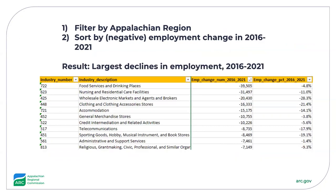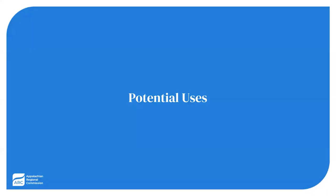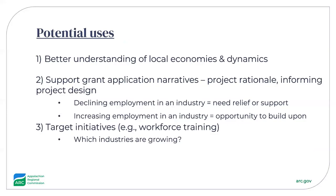Another example here shows the industries that saw the largest absolute declines in employment from 2016 to 2021. Once again, just a few clicks were necessary to get there. Like all of our research reports and data resources, this can be used for a variety of purposes. At the most basic level, it allows users to develop a better understanding of local economies and trends throughout the region. But information here can also be used to help design programs and support grant application narratives.